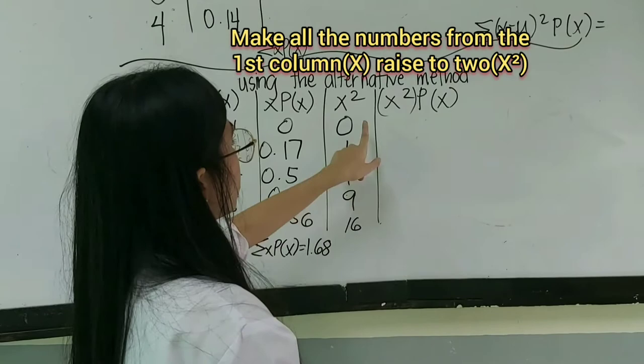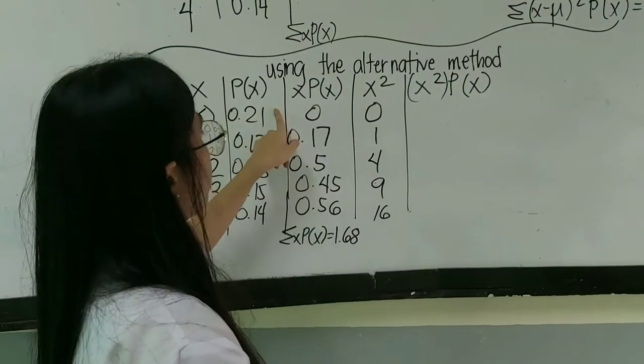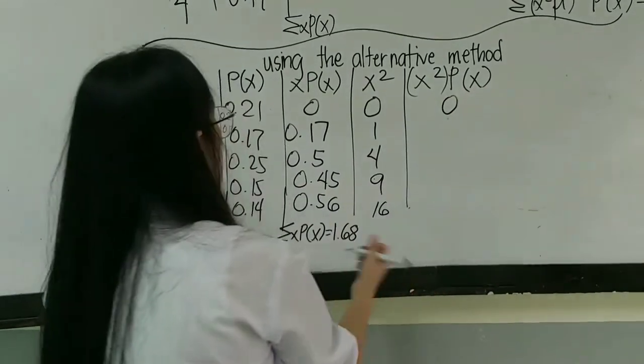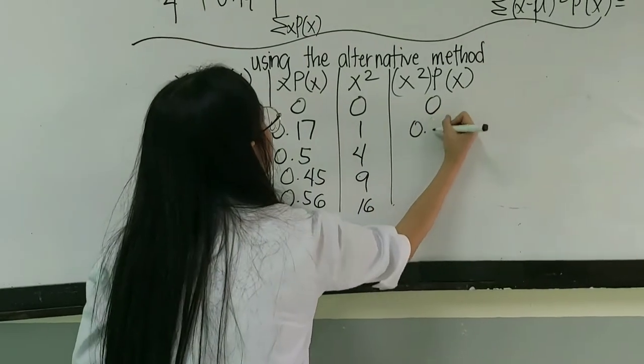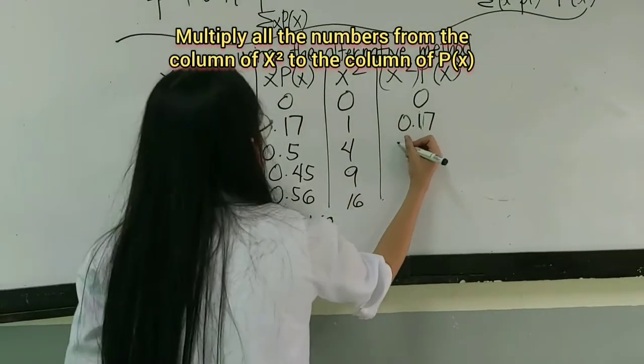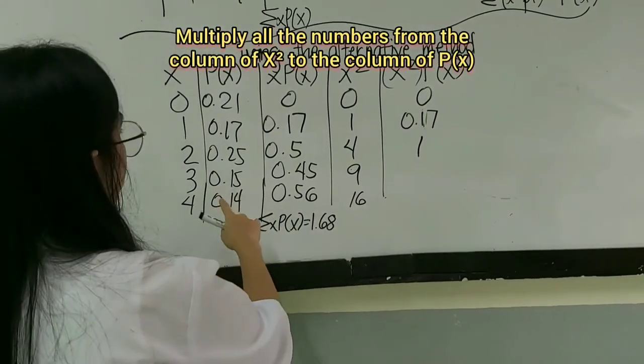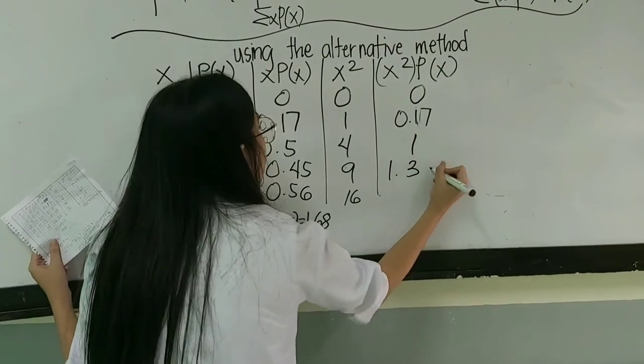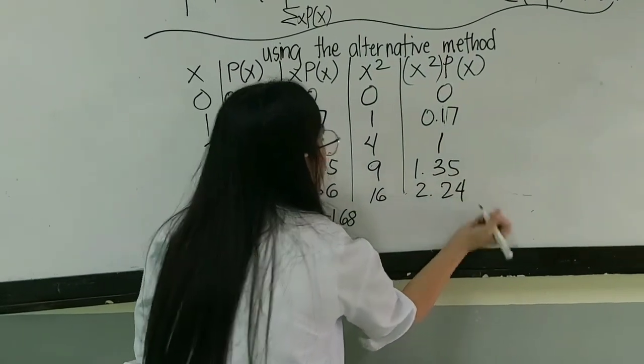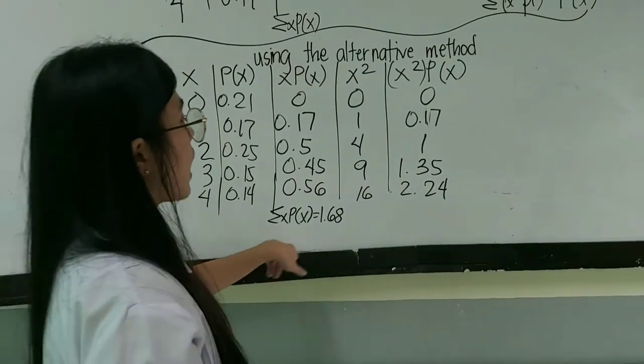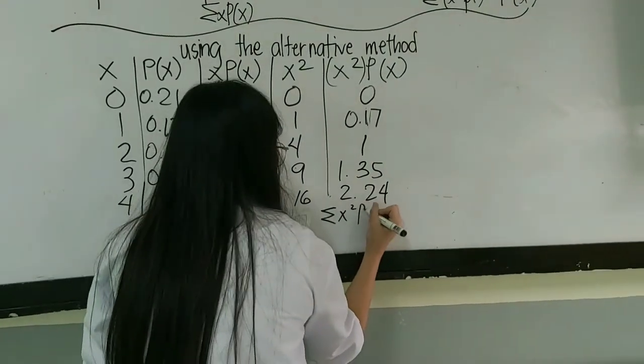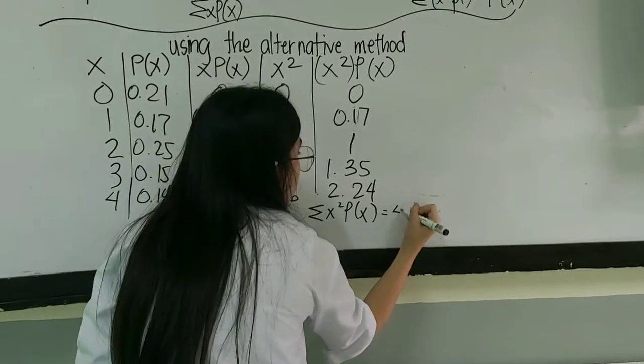For the last problem, you'll multiply X squared to the P of X. So, 0.21 times 0 is equal to 0. 0.17 times 1 is equal to 0.17. 0.25 times 4 is 1. 0.15 times 9 is 1.35. 0.14 times 16 is 2.24. Just like in getting the mean, you'll add the numbers in this column.